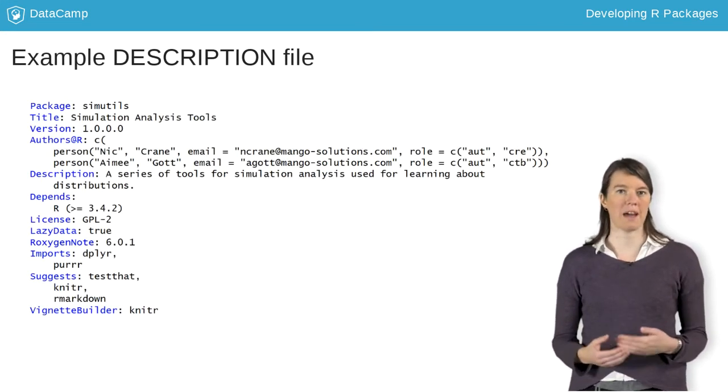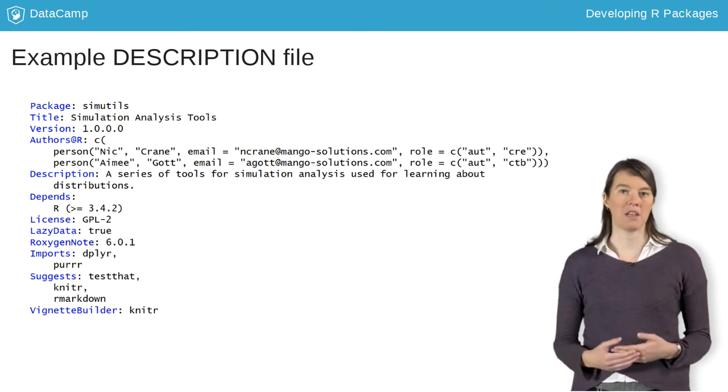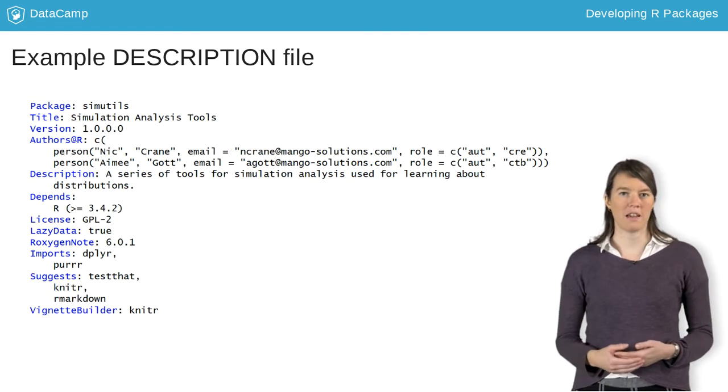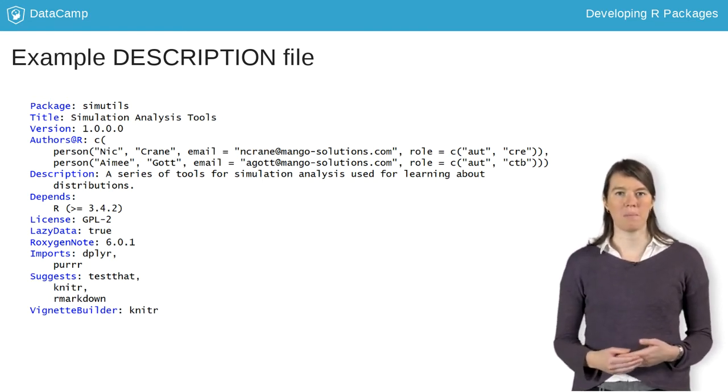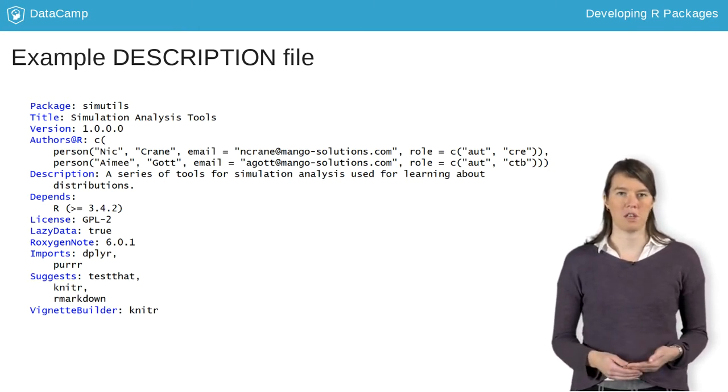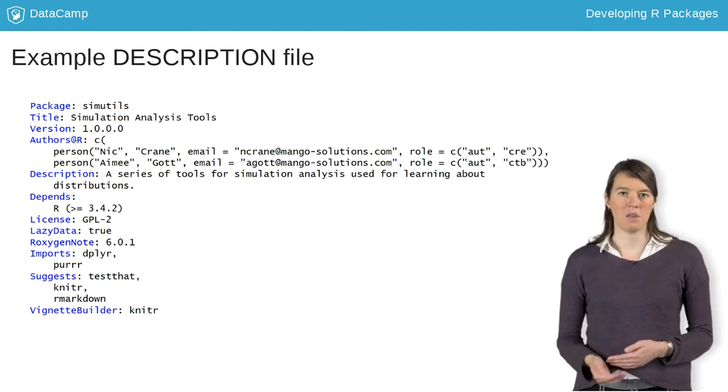The basic package metadata includes the package name that you chose when you created the package, as well as a one-line title for your package and a short description. This is the information people typically use to judge the content of your package when searching for new packages, so keep it relevant and descriptive and make sure you update it if you change the package.